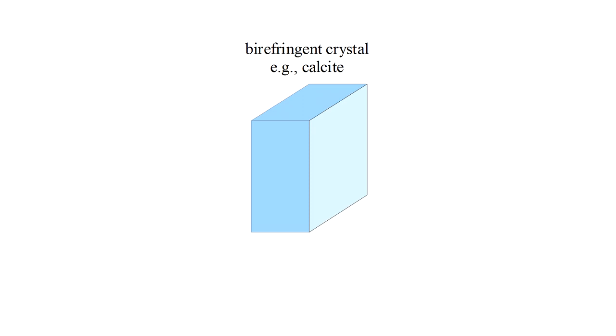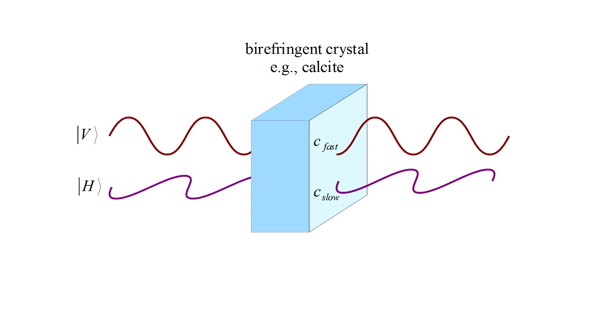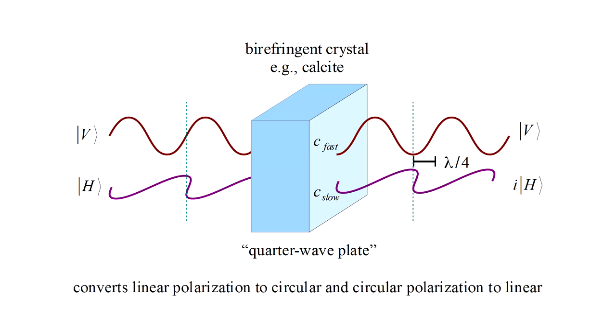One more bit about polarization measurement. A so-called birefringent crystal, calcite is one example, has the property that the speed of light in the crystal is different for different linear polarizations. If we arrange for v polarization to be the fast wave and h polarization to be the slow wave, and we choose an appropriate crystal thickness, we can cause the h polarization to emerge from the crystal delayed relative to the v polarization by one quarter wavelength, hence by one quarter oscillation period. We represent that delay by the imaginary unit i. So if we illuminate the crystal with equal amounts of v and h polarization, which we earlier saw produces a linear polarization at 45 degrees to the vertical, the output will be the superposition of v and delayed h polarizations that corresponds to a right-hand circularly polarized wave.